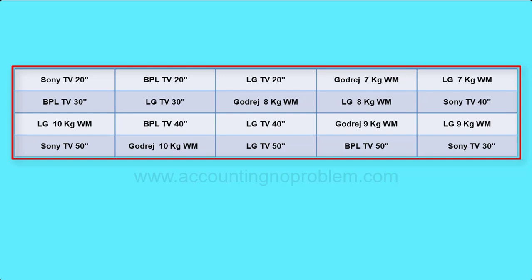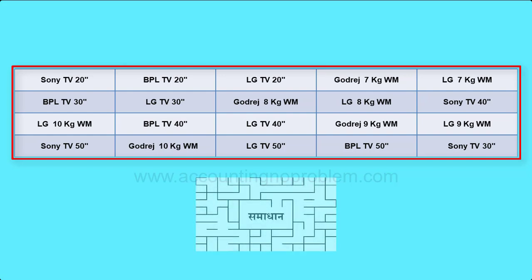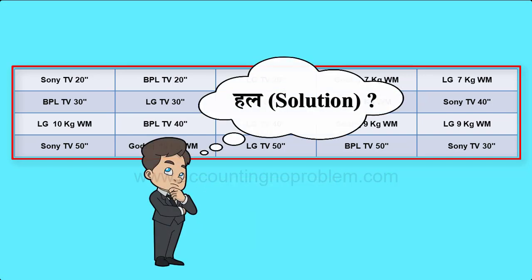तो इस तरह की जानकारी के लिए हमें हर item का अलग-अलग stock देखना होगा और उन्हें product और brand के हिसाब से अलग-अलग कहीं लिखना होगा और फिर उनका total करना होगा। यह एक लंबा और ज्यादा समय लेने वाला procedure होगा, और इतना करने के बाद भी जोड़-बाकी में गलती की संभावना बनी रहेगी। तो फिर इसका solution क्या है?